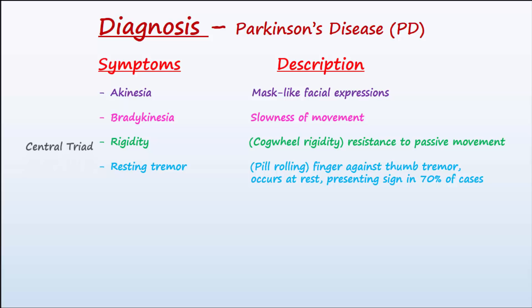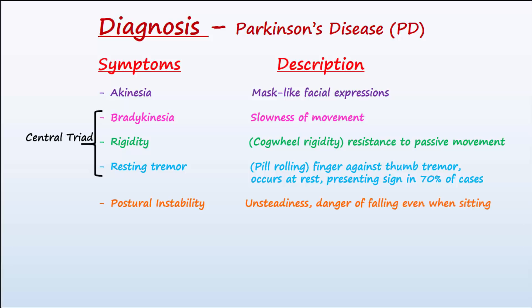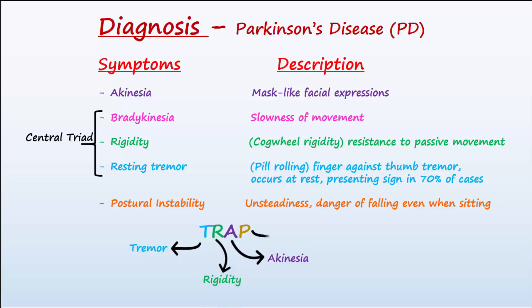The central triad of symptoms observed in PD is resting tremor, rigidity, and bradykinesia. PD patients also experience postural instability, which is unsteadiness that increases the risk of falls whether standing or sitting. The acronym TRAP may be used to remember the classical symptoms: resting tremor, rigidity, akinesia, and postural instability. But please also remember bradykinesia.